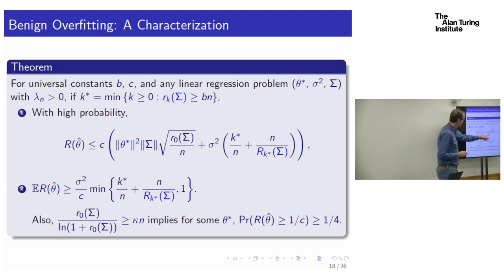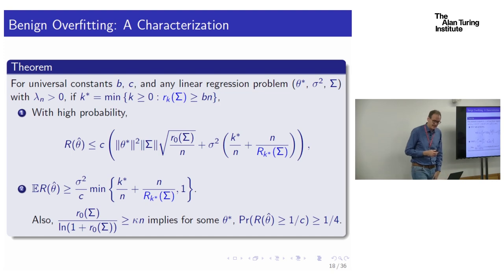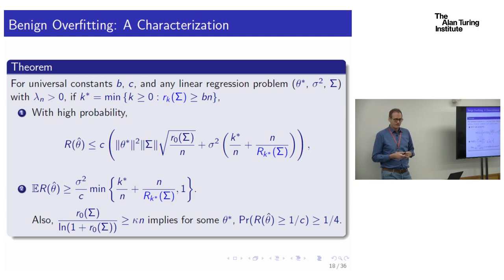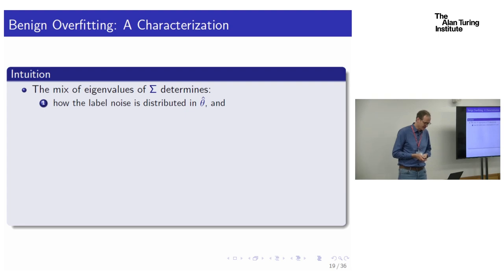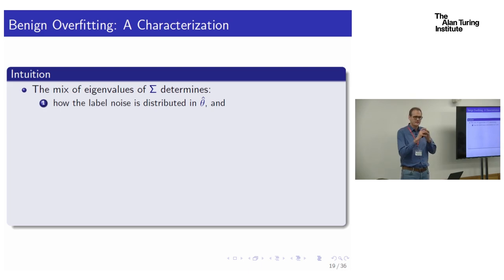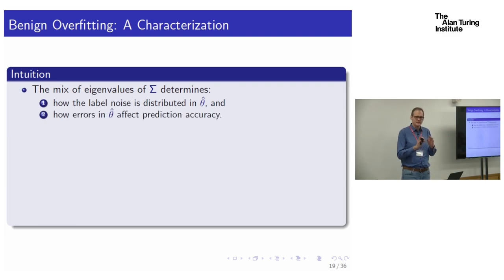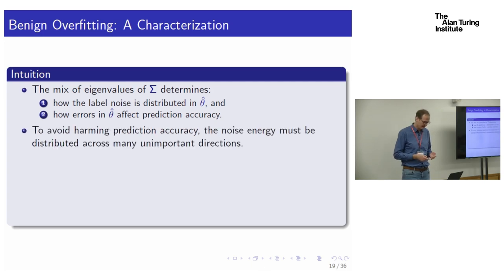Having defined K-star, it must not be too big compared to N, and the effective rank capital R_{K-star} should be big compared to N. Qualitatively, the theorem says that to avoid hurting prediction accuracy, we need many unimportant directions where we can spread the noise energy. After going through those K heavy high-variance directions that really matter, we need a lot of remaining directions compared to N.